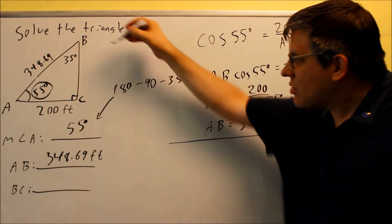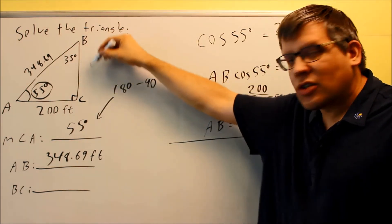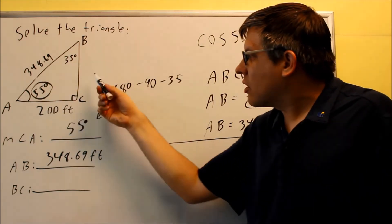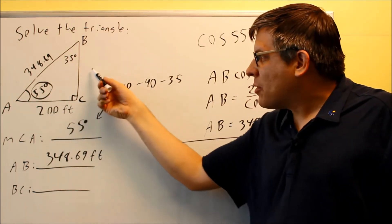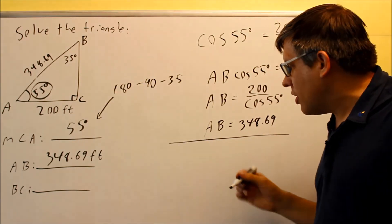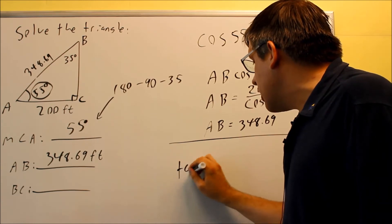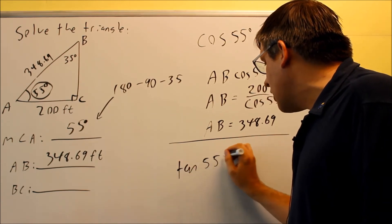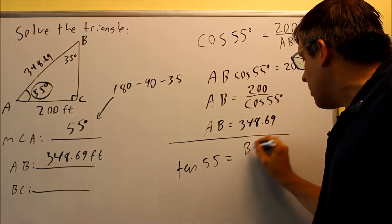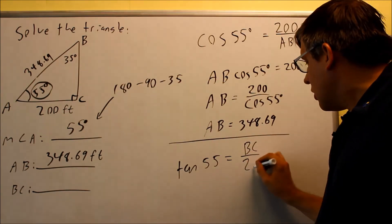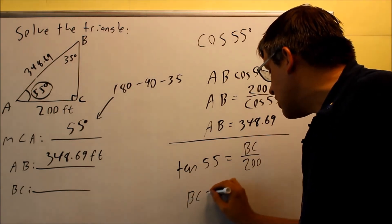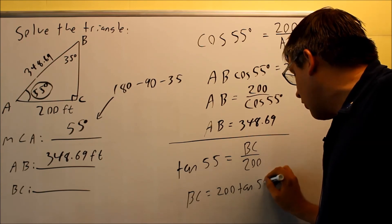I want to pick a trig function that relates this side, the one I'm trying to solve for BC, over the adjacent side. I have an opposite, because I'm using 55 degrees. Opposite would be BC and adjacent is 200. So I would be doing tangent 55 degrees equals BC over 200. When I cross multiply, I get BC equals 200 tangent 55.